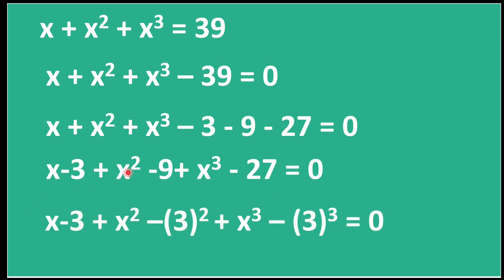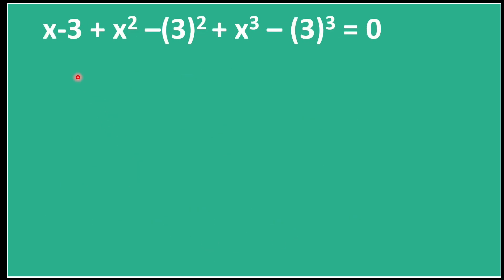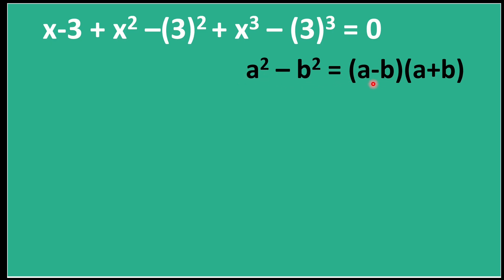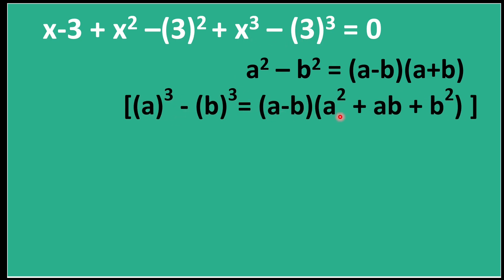In the next step, we write 9 as 3² and 27 as 3³, so the equation becomes (x − 3) + (x² − 3²) + (x³ − 3³) = 0. Now we can apply algebraic formulas: the difference of squares a² − b² = (a − b)(a + b), and the difference of cubes a³ − b³ = (a − b)(a² + ab + b²).